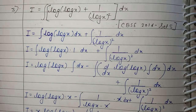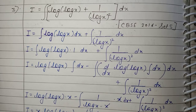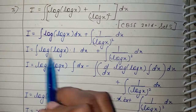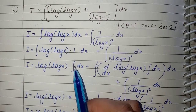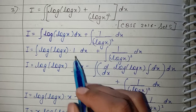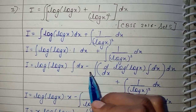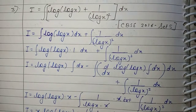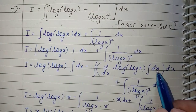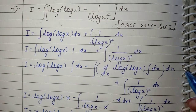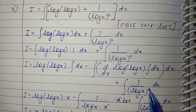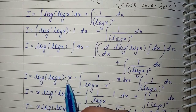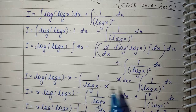We solve the first part using integration by parts. The formula is ∫u·v dx = u·∫v dx − ∫(du/dx · ∫v dx) dx. The first function is log(log x) and the second function is 1. We will not integrate log(log x) directly because there will be a term that will cancel it.